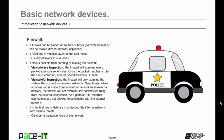Firewalls block packets from entering or leaving the network through one of two methods. Stateless inspection is where the firewall examines every packet against a set of rules; once the packet matches a rule, the specified action is taken. The other method is stateful inspection, where the firewall only examines the state of the connection. When a connection is made from an internal network to an external network, the firewall will not examine packets returning from the external connection, and external connections are not allowed to initiate with the internal network.